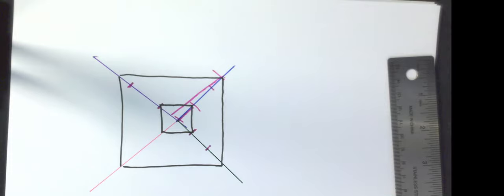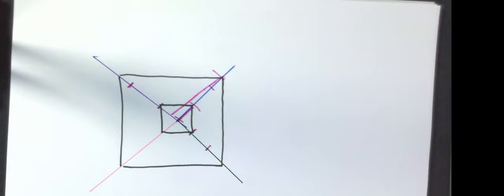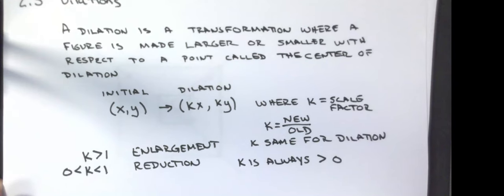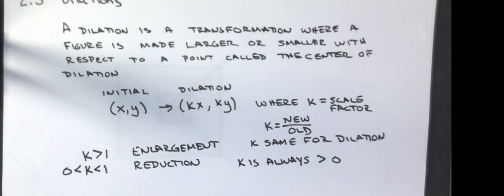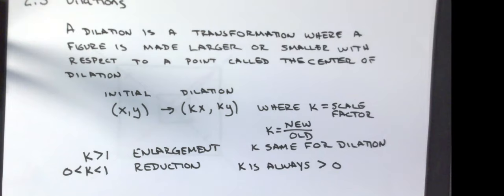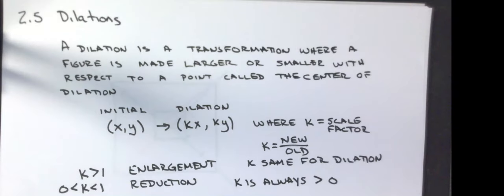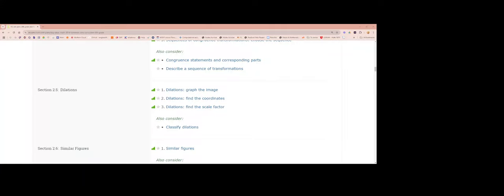To do IXL problems, you need to be able to read coordinates off a graph. The easiest approach for every problem is to write the original coordinates down first. The practice tasks include graphing images given a scale factor, finding coordinates of dilated figures, and finding scale factors.